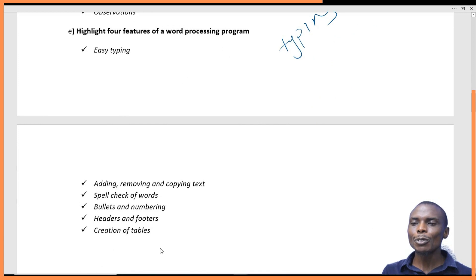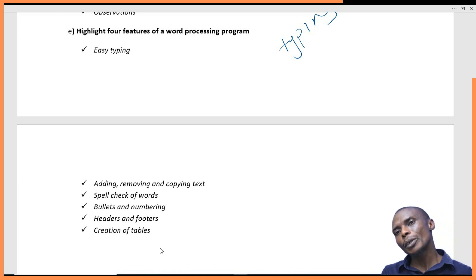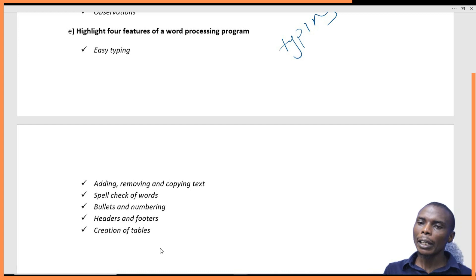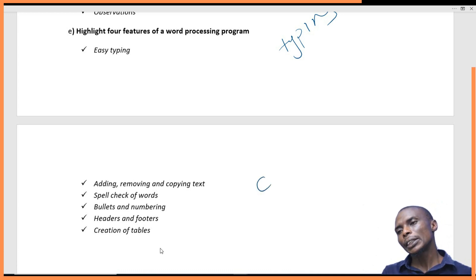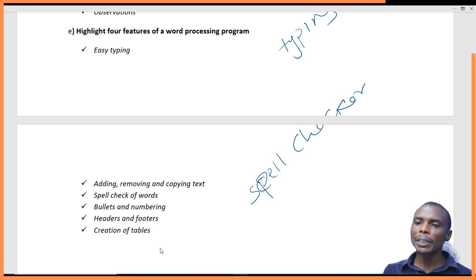We also have adding, removing, and copying text. We can add text easily, remove text easily, copy text, or paste it elsewhere using a word processing program — using your mouse or the menu bar which has cut, copy, and paste icons. We also have the spell checker feature. The spell checker helps us identify spelling errors or spelling mistakes, which can be automatically corrected. We can also identify grammatical errors and remove them easily.